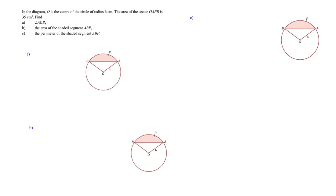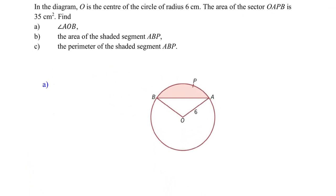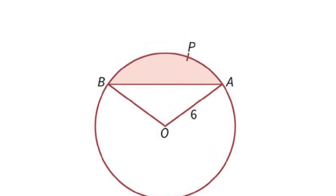They also give me an important information, area of the sector O, A, P, B. And with that, I will be able to zoom into part A because then I can find my angle AOB. So if I were to zoom in here, this is the angle that we are supposed to find.